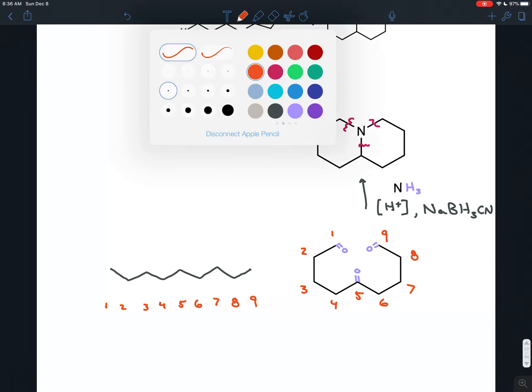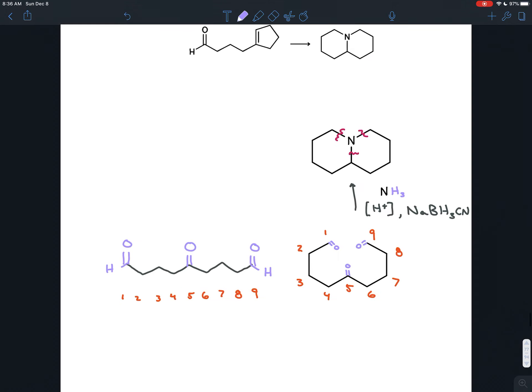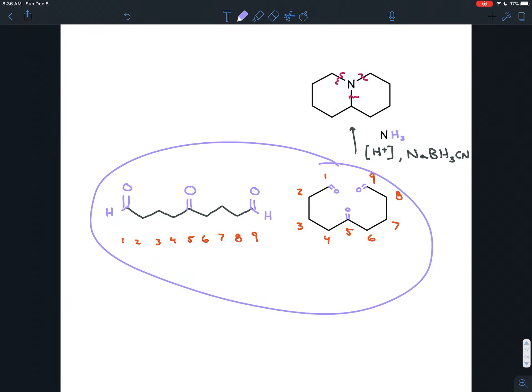Now we have a carbonyl on carbon number one, so I'll draw that in. We have a carbonyl on carbon number five, I'll draw that in. And we have a carbonyl on carbon number nine, I'll draw that in. And these are on the end, so I'll draw in the hydrogens just to make them more clearly aldehydes. So this molecule here is the same. Let me get rid of these orange numbers just so it seems less complicated and distracting.